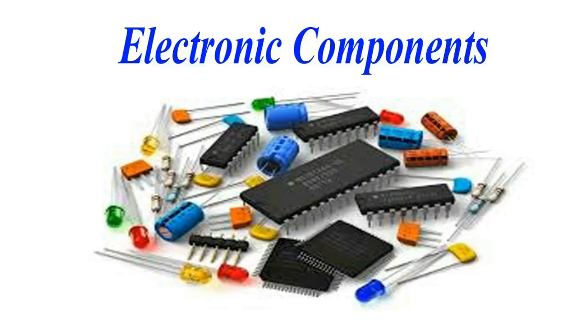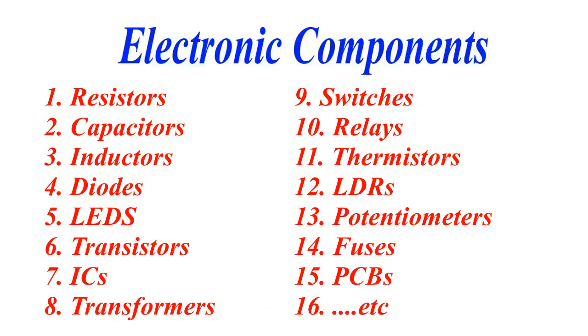So let's quickly recap the 15 components: resistors, capacitors, inductors, diodes, LEDs, transistors, ICs, transformers, switches, relays, thermistors, LDRs, potentiometers, fuses, and PCB. Each plays a unique role, and together they make our modern electronic world possible.